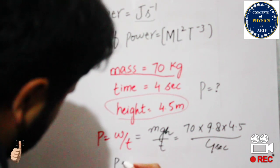If we calculate this example, the answer will be power equals 7.7 times 10 raised to the power 2. The unit of power is Joules per second.